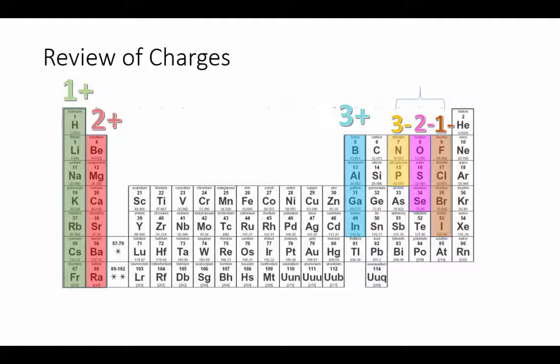Your periodic table should look similar to this with the ion charges written in, and remember that our non-metal ions all end in -ide: nitride, phosphide, oxide, selenide, etc.